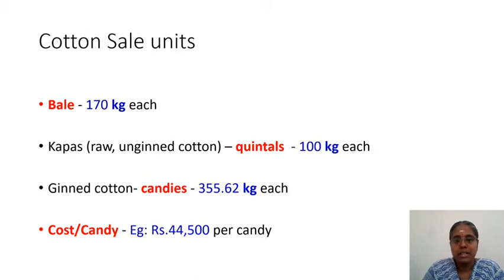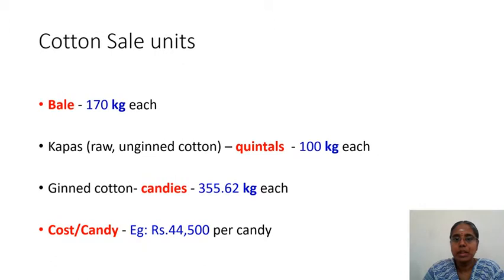A bale is 170 kg in India, though it differs by country. Kapas is usually weighed in quintals — one quintal is 100 kg. After ginning, when the seeds are removed and cotton is packed, it is sold in candies. One candy equals 355.62 kg, and cotton prices in the market are quoted in candies.